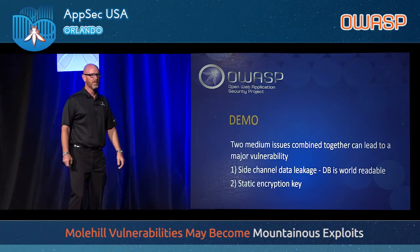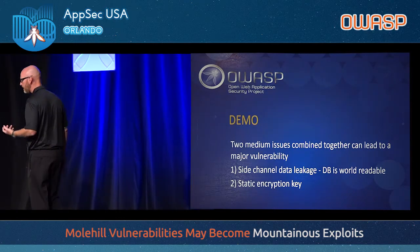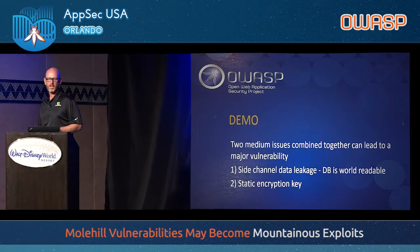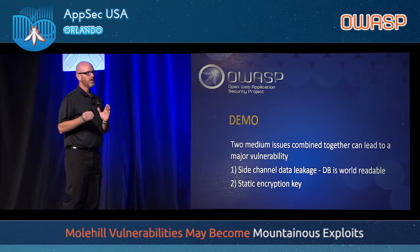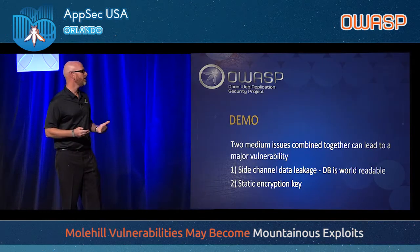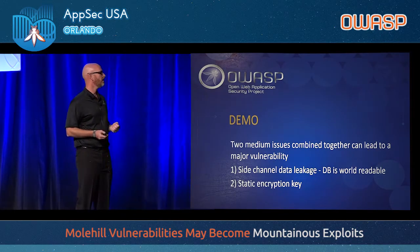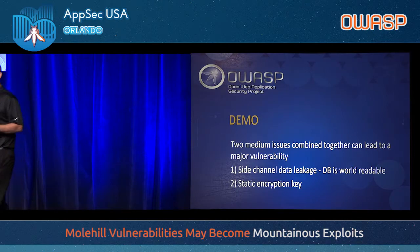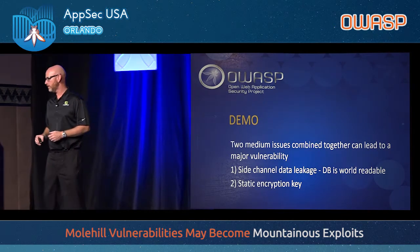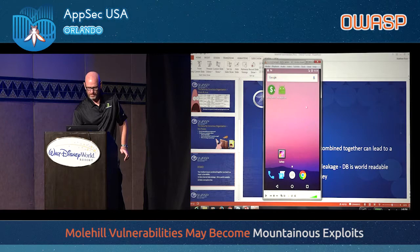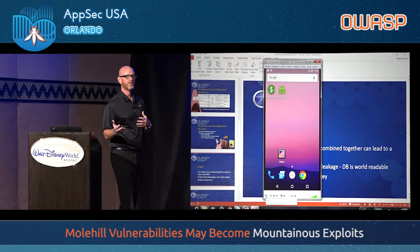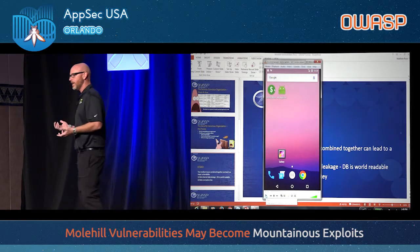Now for a demo. This is an Android app where two medium issues combined can lead to a major vulnerability. The two issues — by themselves they carry a little bit of risk, but brought together we're going to show you an application running and then an exploit app that feeds off of side channel data leakage. The database is world-readable, and there's a static encryption key — an encryption key that does not change over time. This was done as a recorded session to avoid hiccups during the presentation.